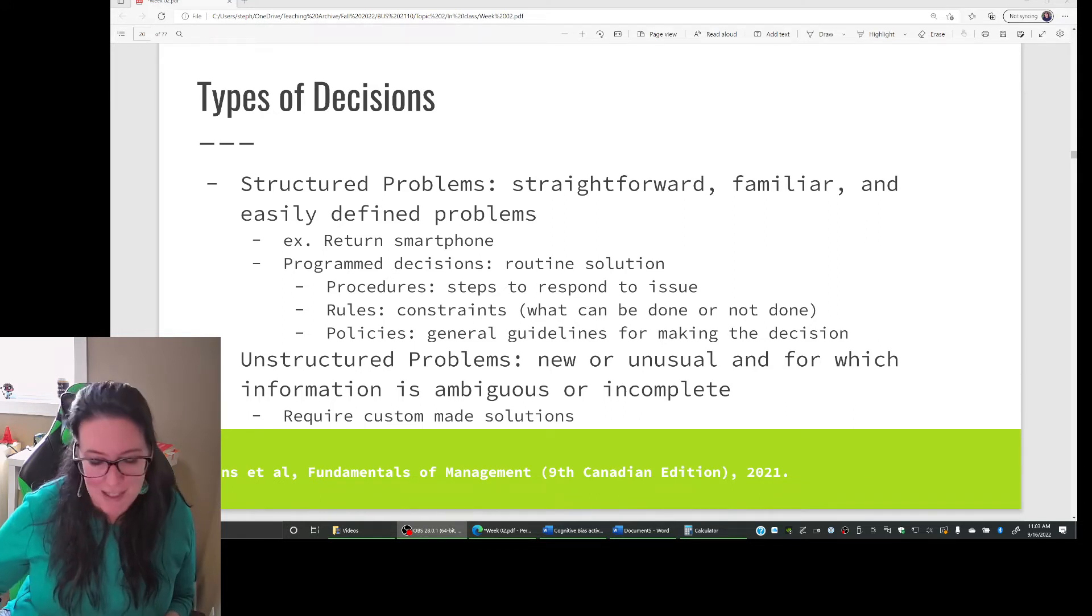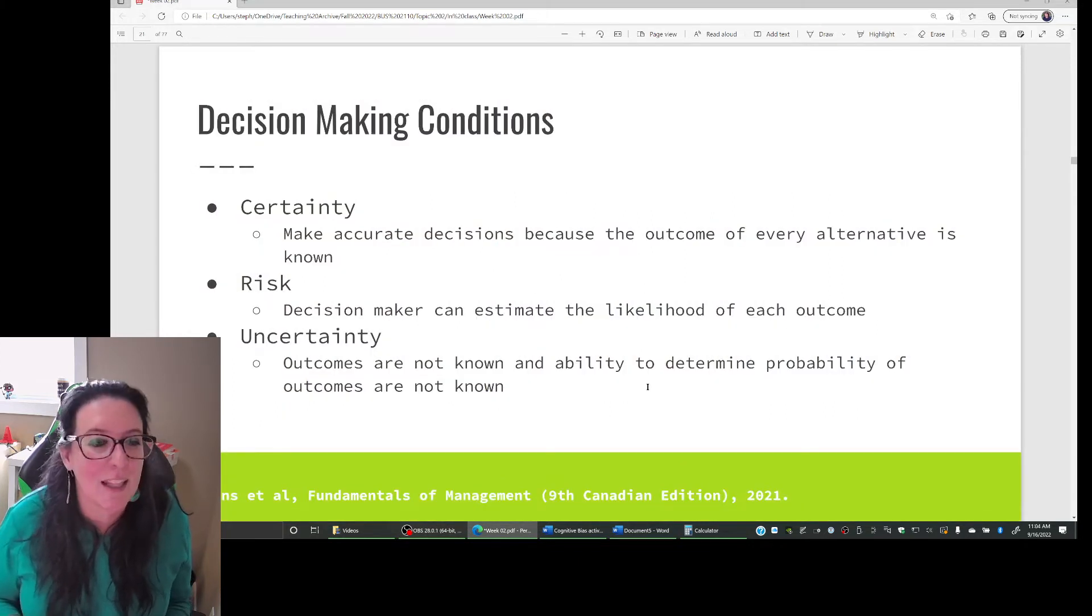When we look at our decision making, we said we need to look at the approach to decision making, rational, bounded, more intuition based. We need to look at the type of decision. So structured or unstructured. And then the other thing we want to consider here is the level of uncertainty in the decision.